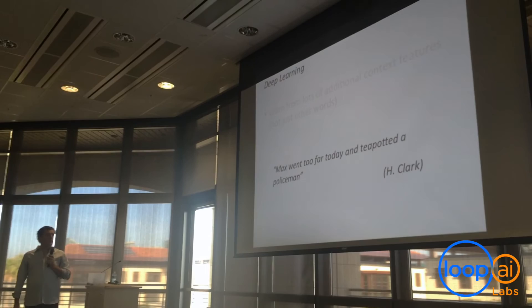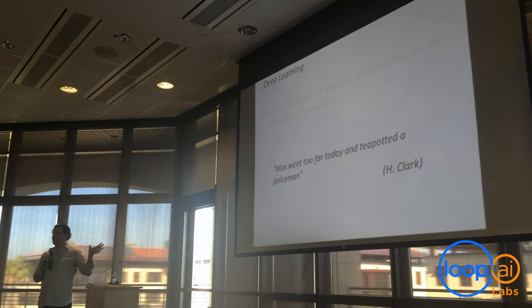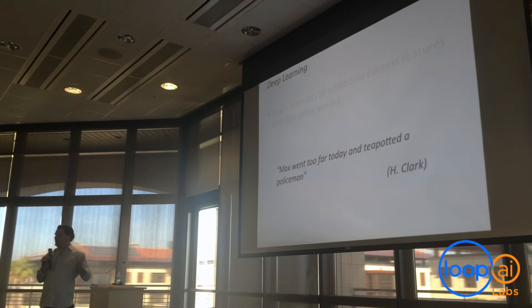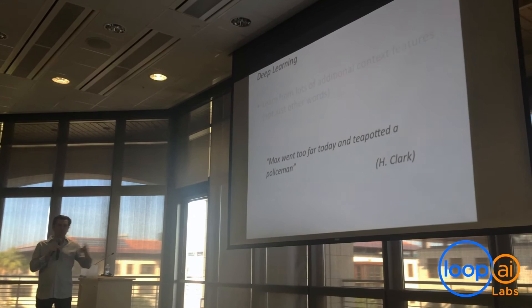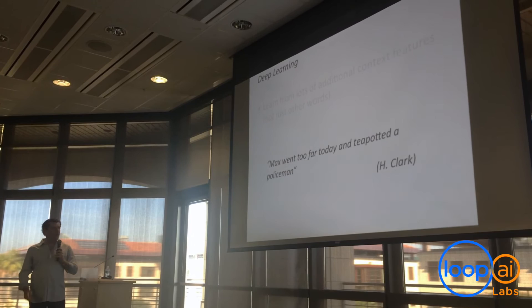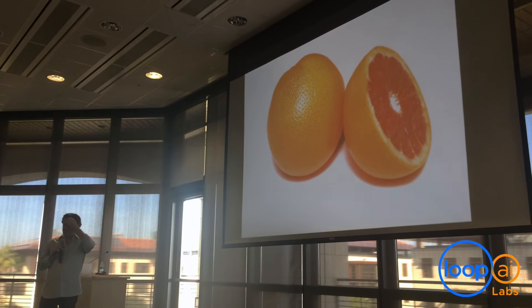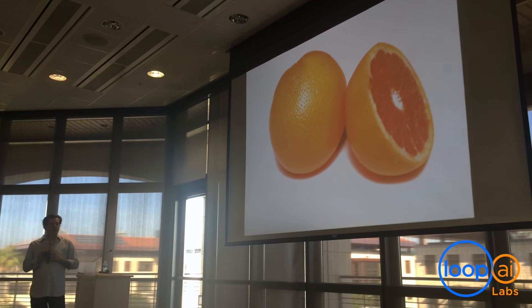Going back to Herb Clark's example — 'Max went too far today and teapotted a policeman' — this doesn't seem like a sensible sentence unless you have a bunch of contextual information. That contextual information might come in different ways: some story or memory you had about Max, a visual experience you shared with the other person — maybe you've never actually talked about Max teapotting someone, but because you shared this visual experience you're able to understand the sentence. The main point is that we can take language and add in all these contextual features from different modalities.